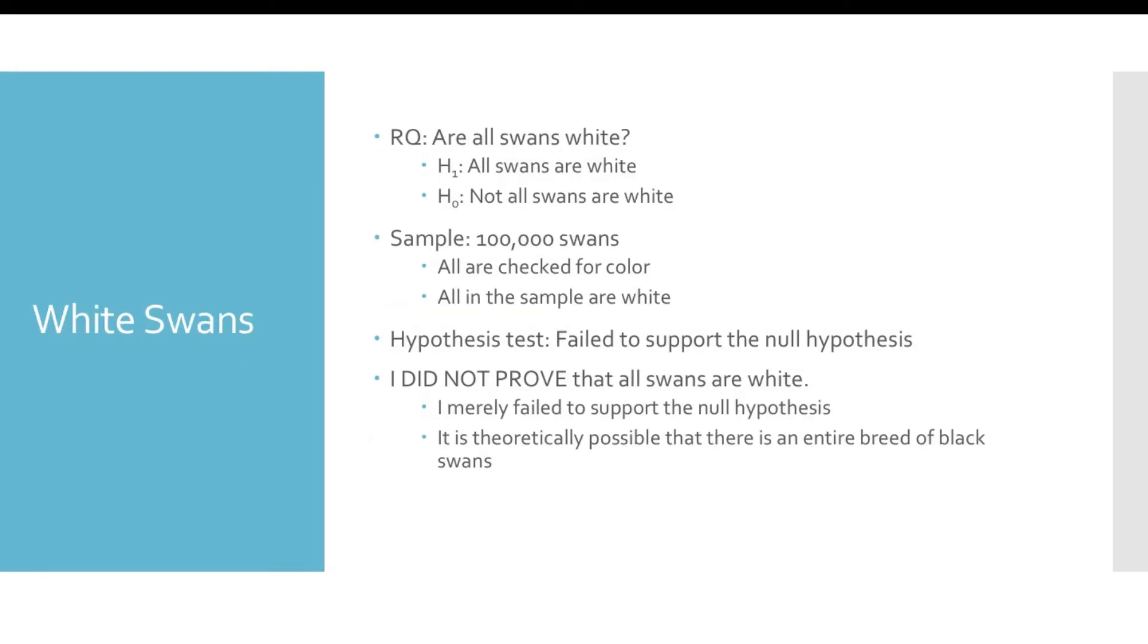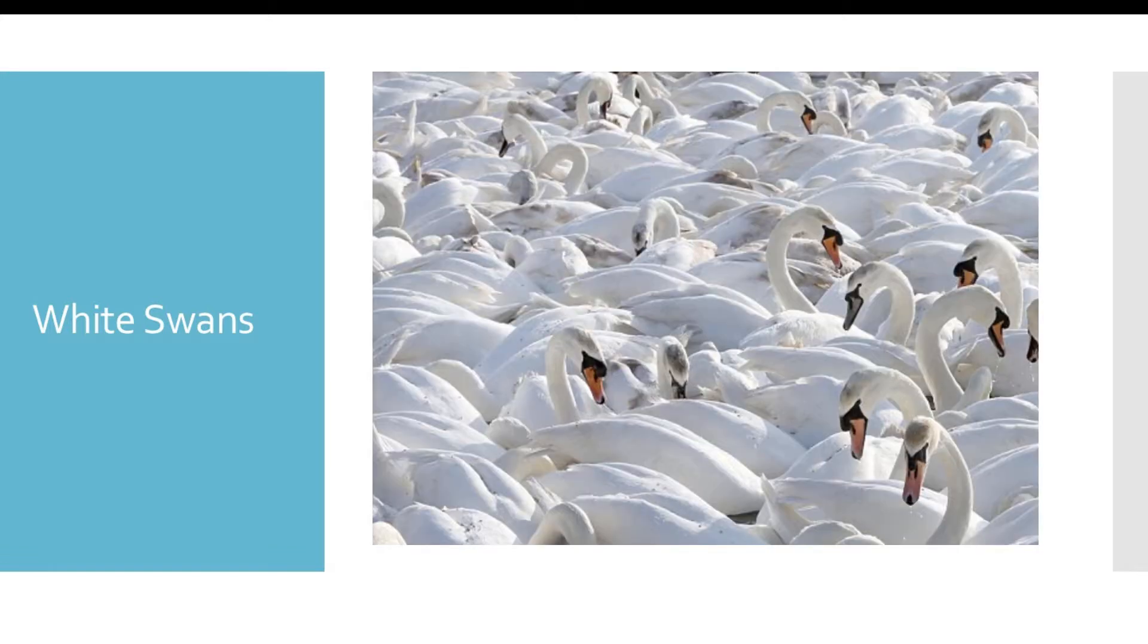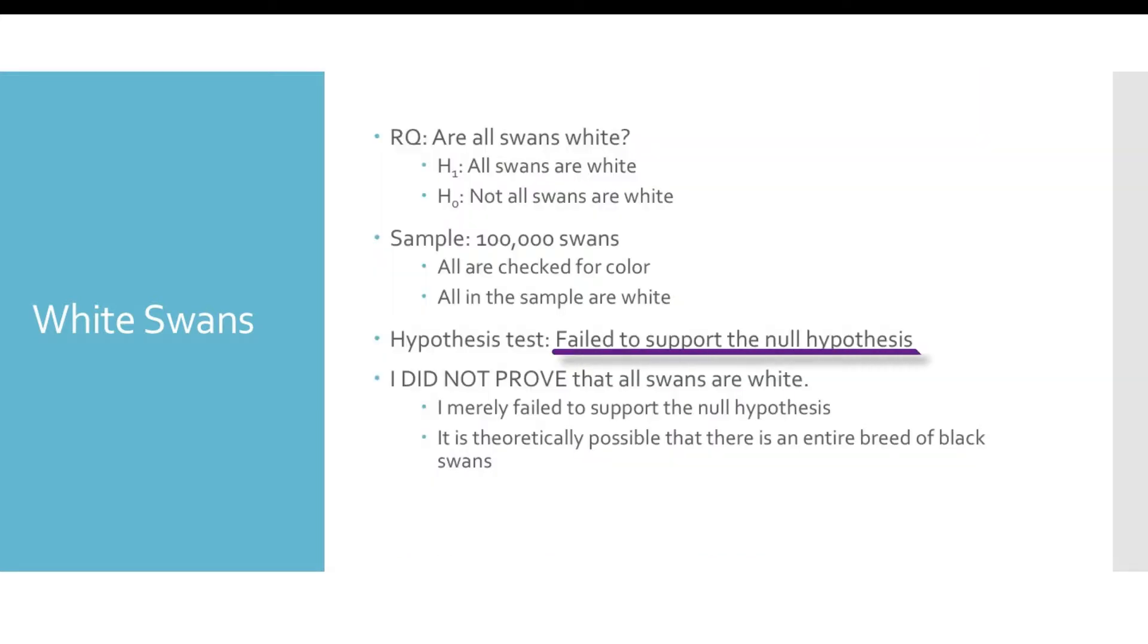Consider our hypothesis that all swans are white. I will actually test the null hypothesis and attempt to determine whether I can support the null. I will look for a black swan. So I collect 100,000 swans and carefully analyze their color. In my sample of 100,000 swans, all of them are white. I couldn't find any black swans. And if my sample of 100,000 swans are all white, I have failed to support the null hypothesis.